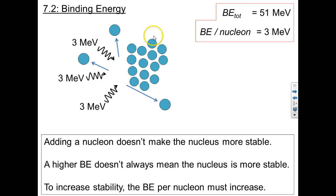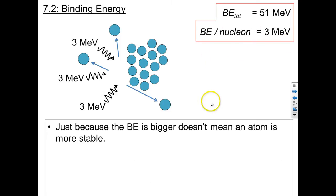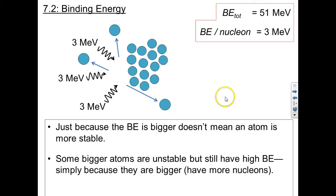So to increase the stability of this atom, we need to increase the binding energy per nucleon. So just because the binding energy is bigger, this jumped to 51, doesn't mean the atom is more stable. Some bigger atoms are unstable, but they have a really high binding energy, simply because they're so big and have so many nucleons. A better indication of stability is this value, the binding energy per nucleon, because that tells us how much work we have to do to knock free each component of the nucleus.